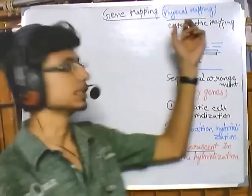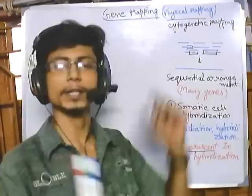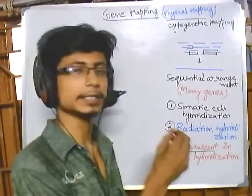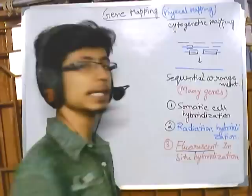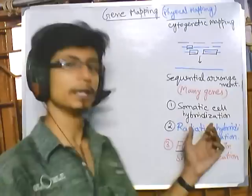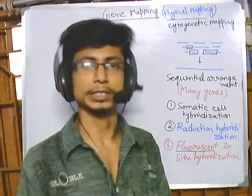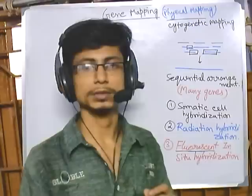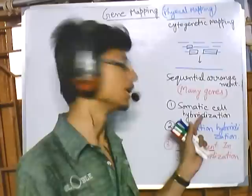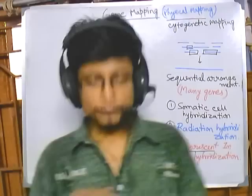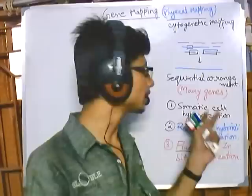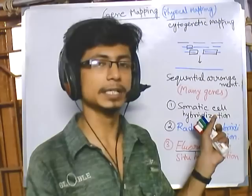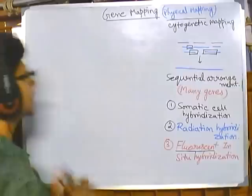Welcome back friends. In the previous video we talked about the concept of physical mapping by placing genes one after another to find out where they are placed. We have seen three different techniques to get results of genetic mapping. Now in this video we'll be talking about somatic cell hybridization, or SCH, and its implication for physical mapping.